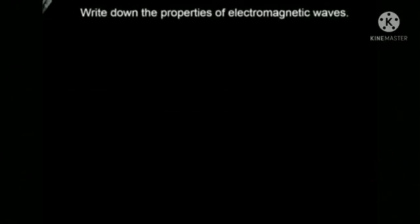In this question, we have to write down the properties of electromagnetic waves. The first property to keep in mind is that electromagnetic waves are produced by accelerated charge — whenever a charge is accelerated, it produces electromagnetic waves.